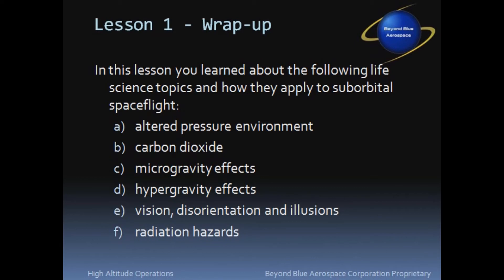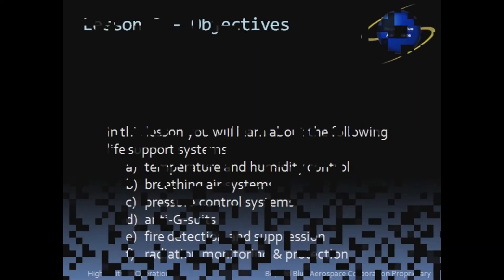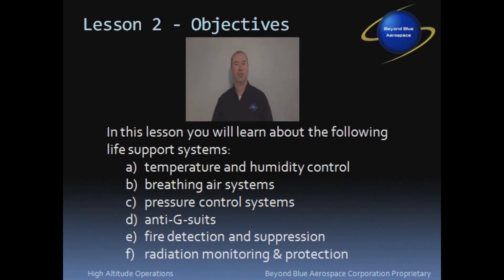This concludes lesson number one. Life support systems are a group of devices that allow humans to survive in outer space. Life support systems are needed to provide humans with an acceptable environment to maintain normal biological functions, to optimize human performance in the hostile environment of space, and to protect against dangers such as toxic exposure or radiation.